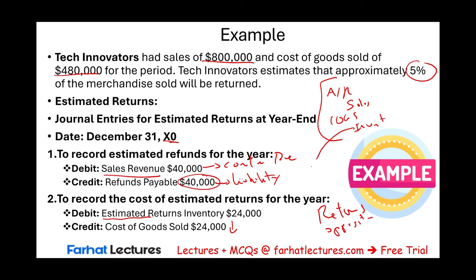Every once in a while, a company must adjust merchandise inventory for shrinkage — loss or theft. If someone steals inventory, they don't go through the register, so the computer record and the actual physical count differ. Under a perpetual system, the computer should show exactly how many units exist, but theft or damage not properly scanned creates discrepancies. Therefore, we periodically adjust inventory for shrinkage.